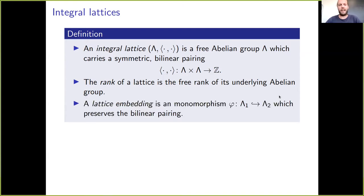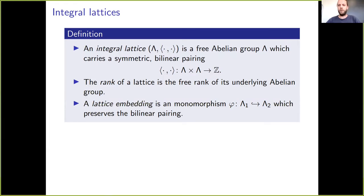A lattice embedding of lambda_1 into lambda_2 is just an injective group homomorphism from lambda_1 to lambda_2 which preserves the bilinear pairing, meaning that we can think of lambda_1 as sitting inside lambda_2, with the pairing on lambda_1 induced by that on lambda_2.